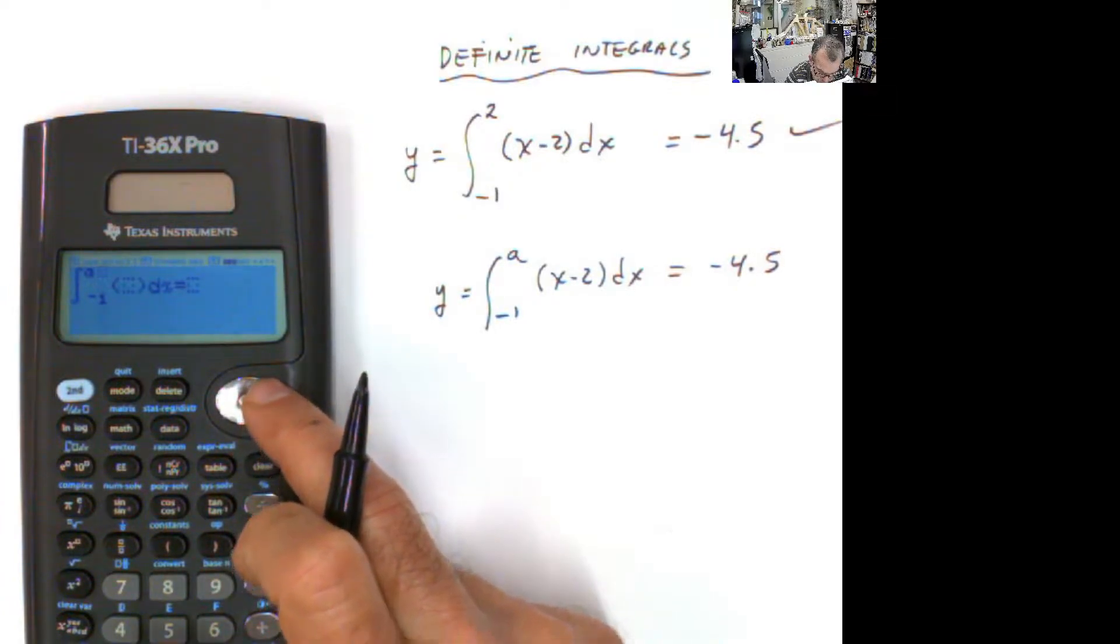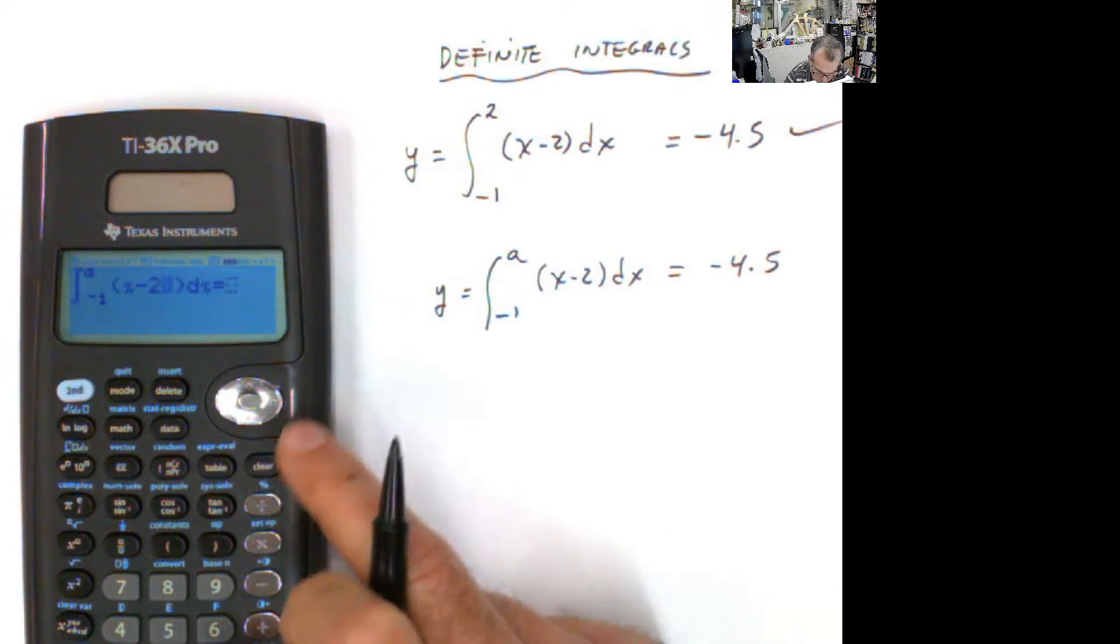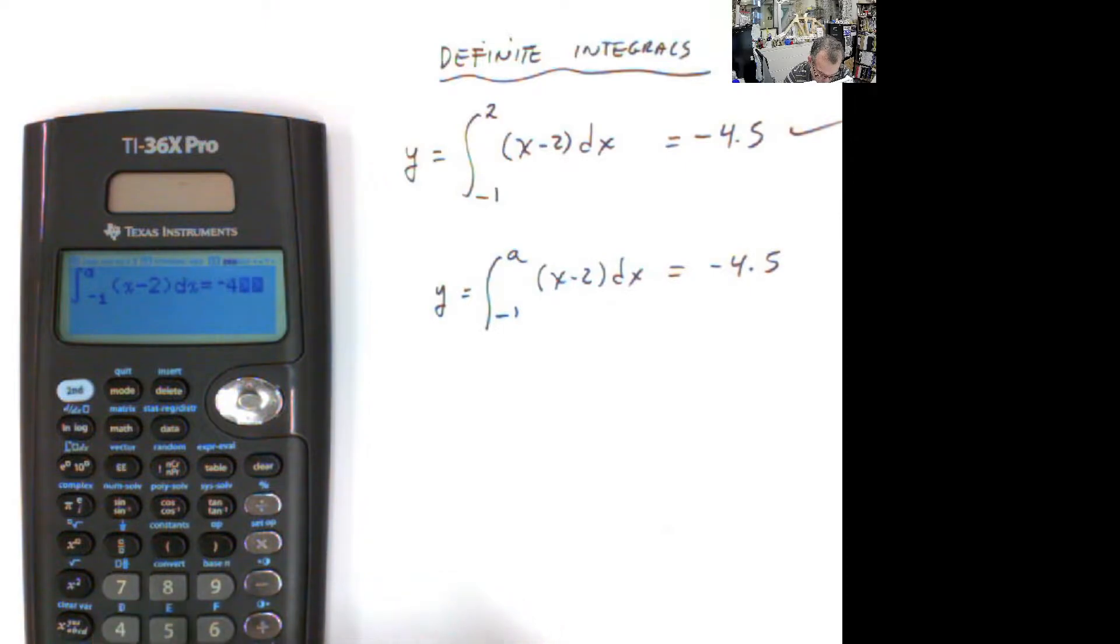Then I go here to the right. I put the function x minus 2, x minus 2. And then you jump to the other side of the integral and put negative 4.5. And that's your equation, right?